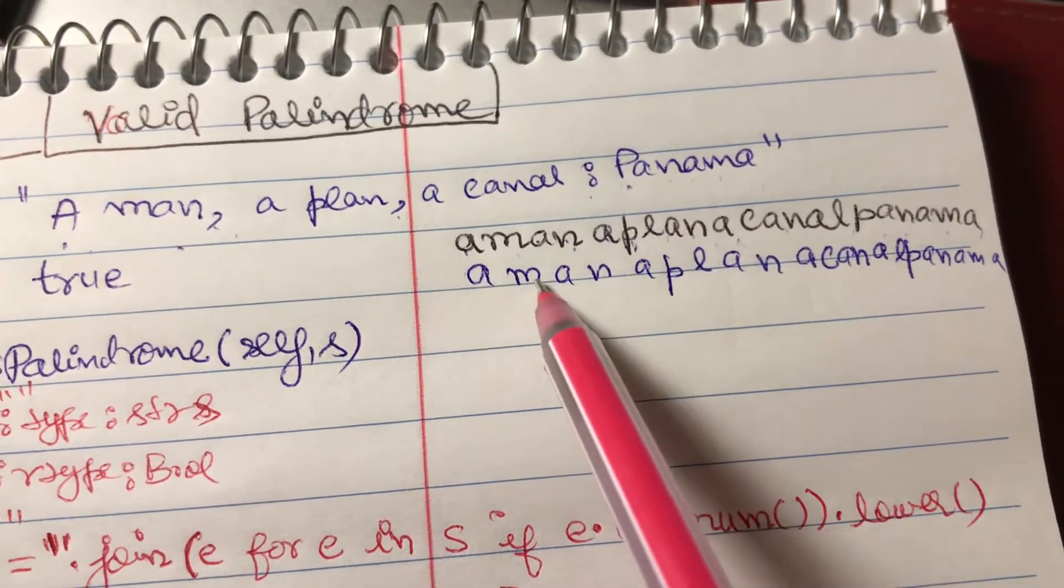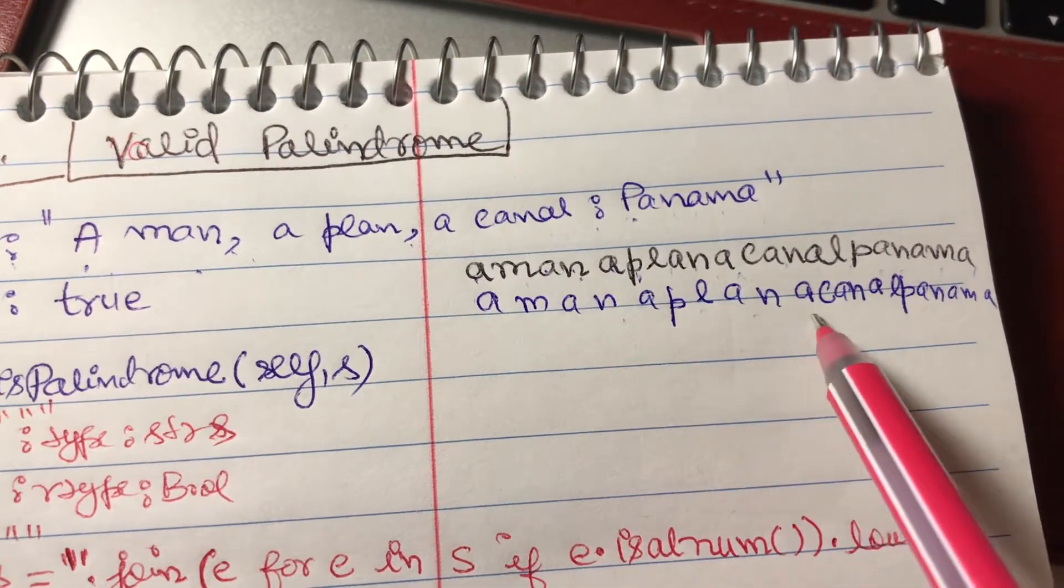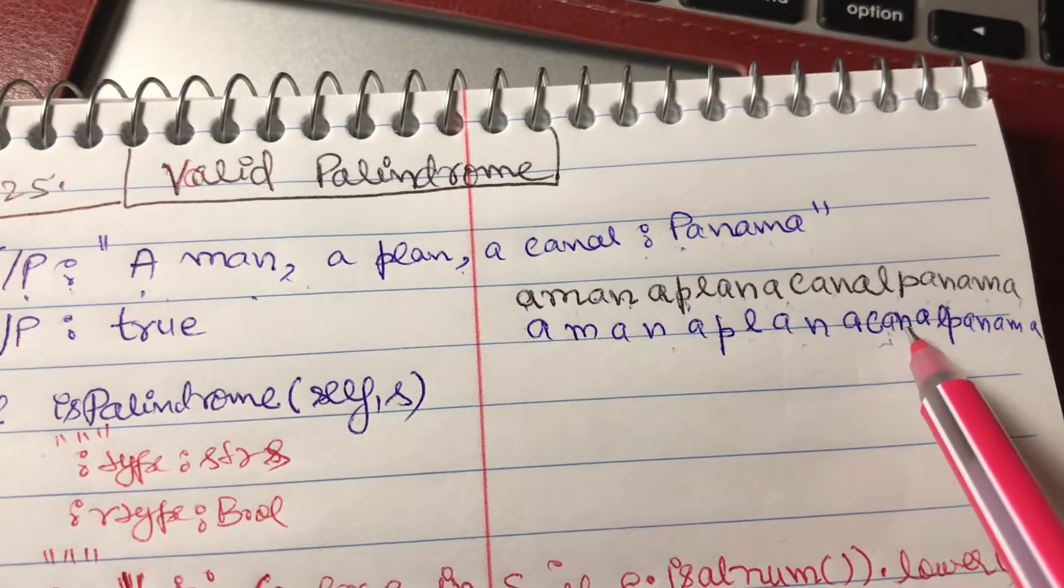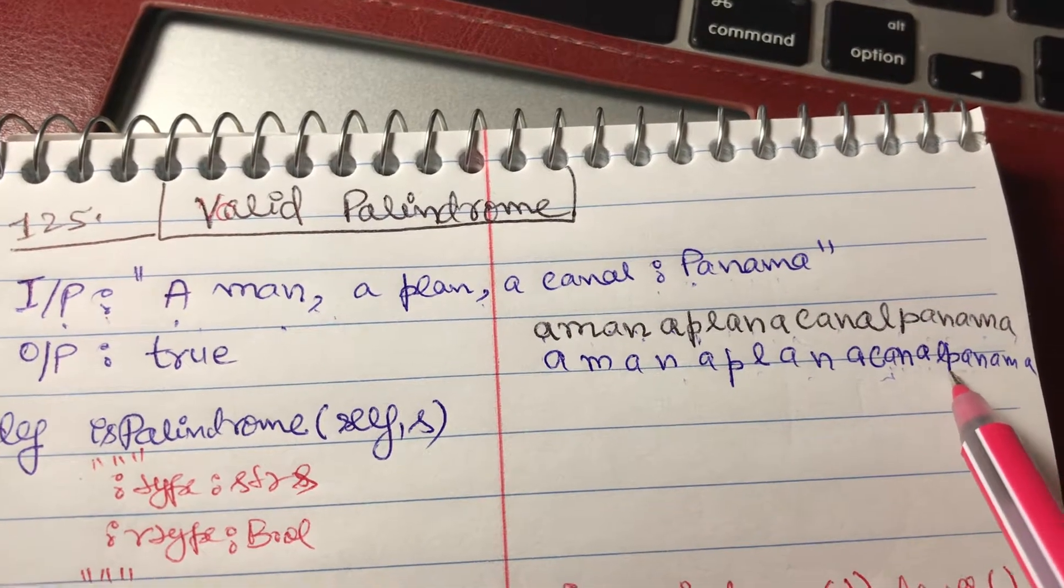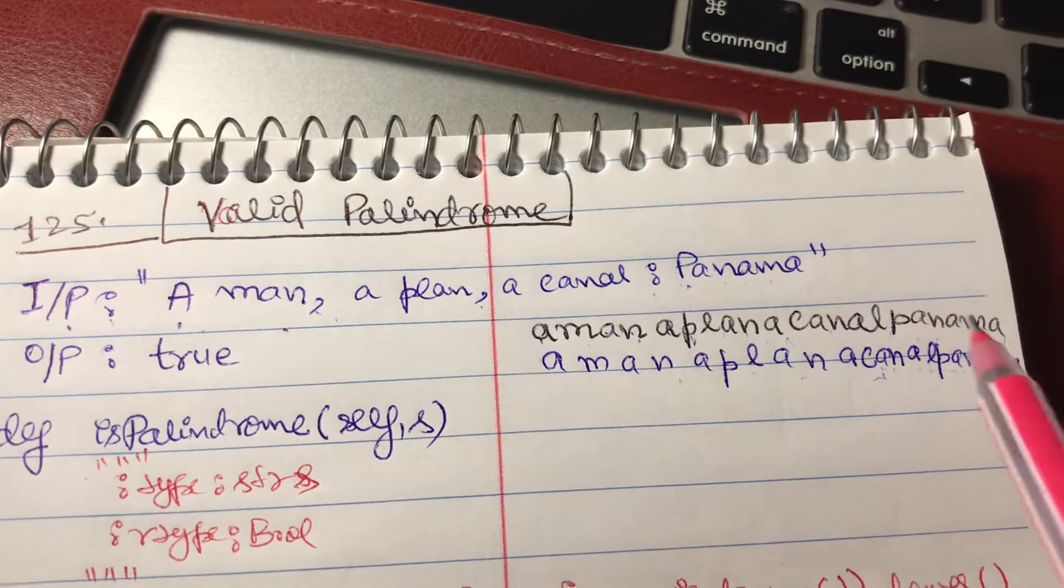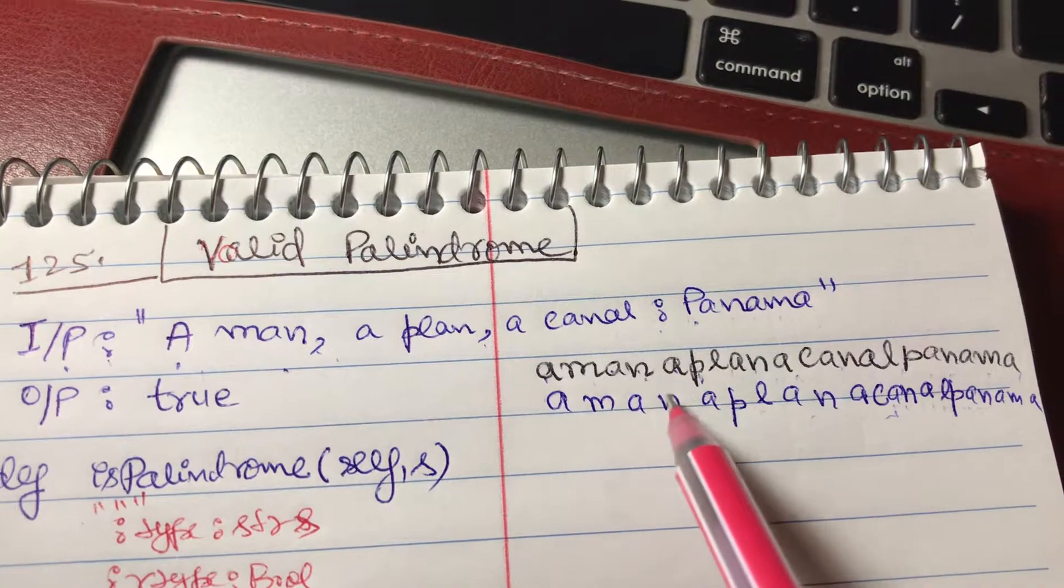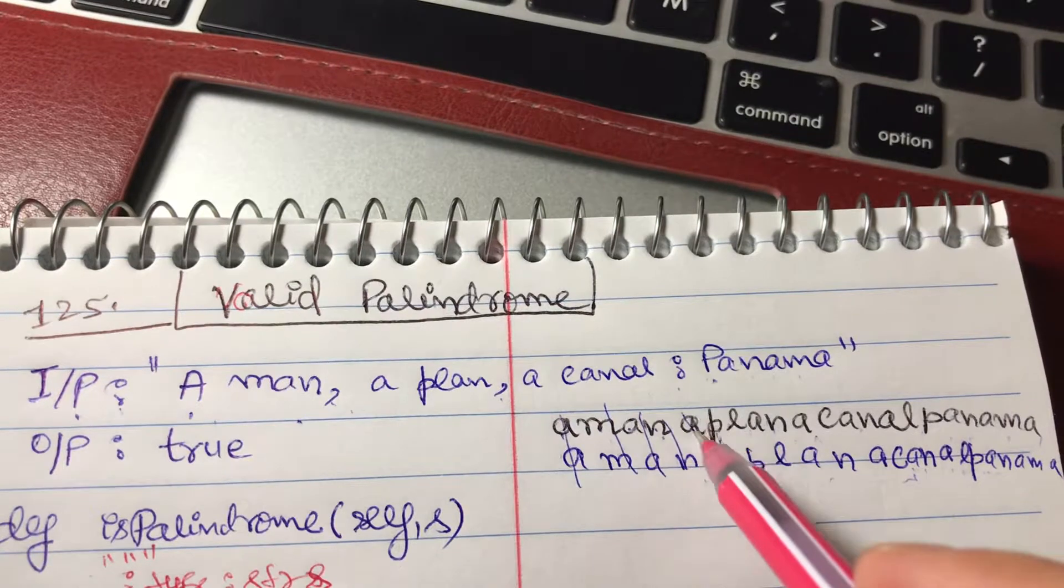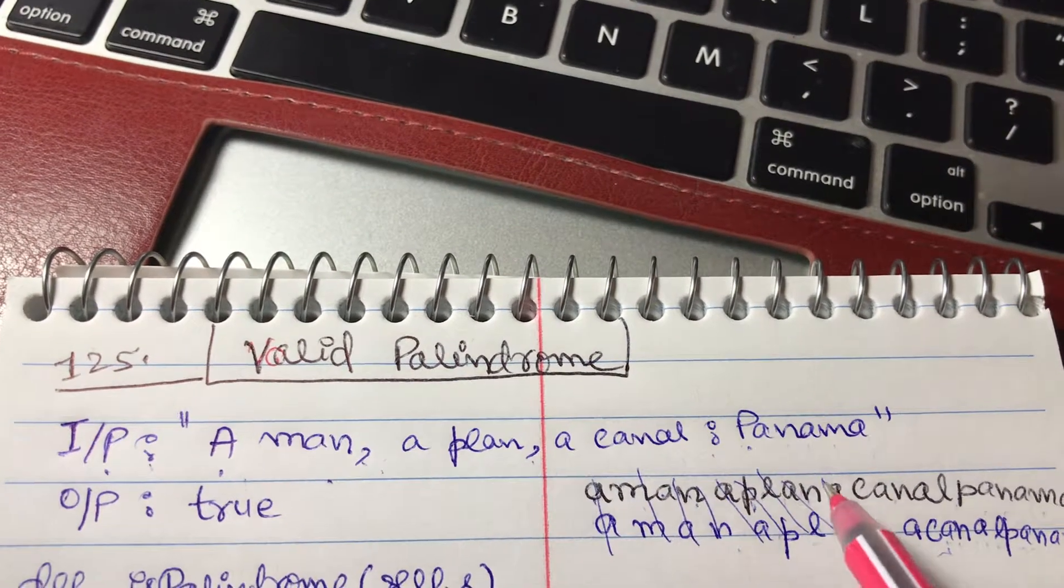So we start with 'a', 'm', 'a', 'n', 'a', 'p', 'l', 'a', 'n', 'a', 'c', 'a', 'n', 'a', 'l', and then 'panama'. I just wrote the same string backwards and we see if we compare them character by character they are exactly the same, they are matching.